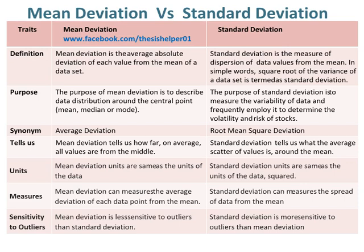Mean deviation can measure the average deviation of each data point from the mean. Whereas, standard deviation can measure the spread of data from the mean. Mean deviation is less sensitive to outliers than standard deviation. Whereas, standard deviation is more sensitive to outliers than mean deviation.